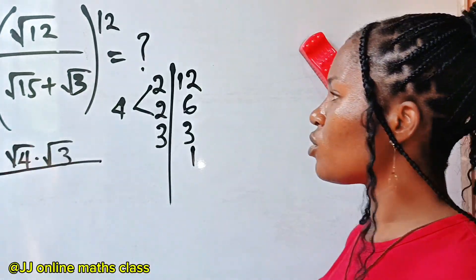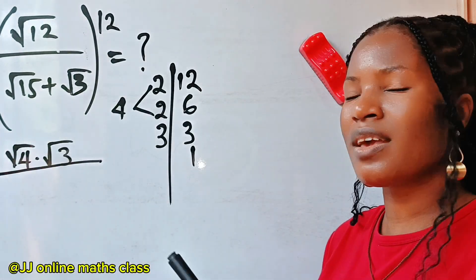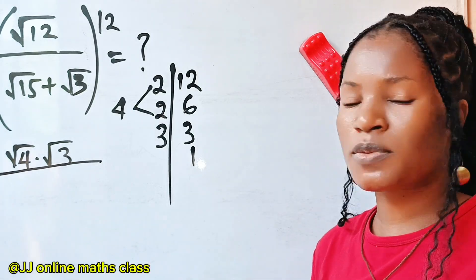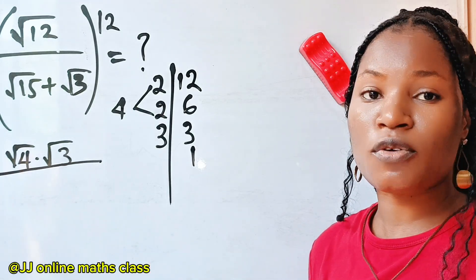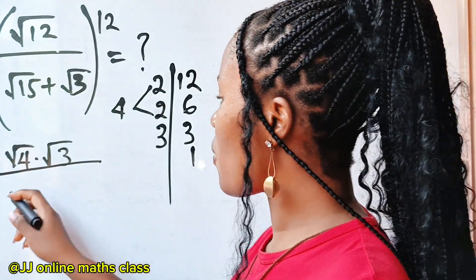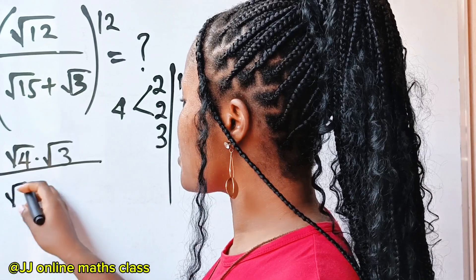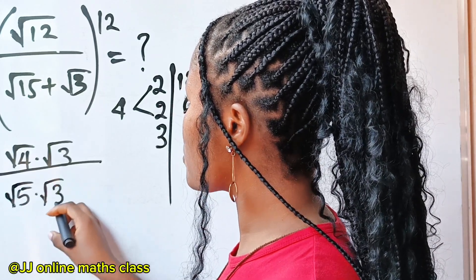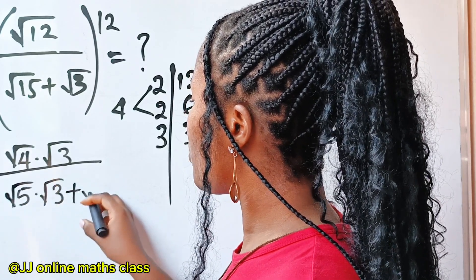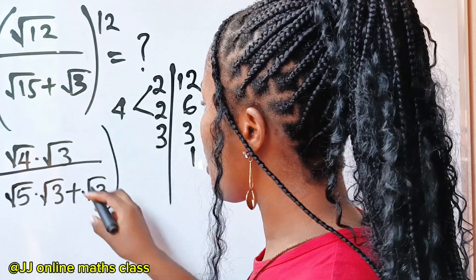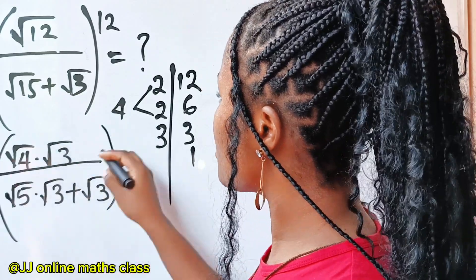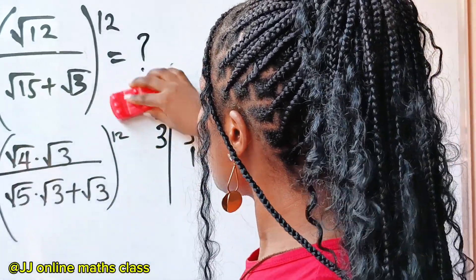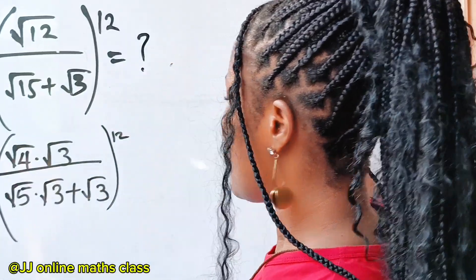Root 15 doesn't have any perfect square in it, so we can express it as square root of five times three. There is no other way to express that. So we have square root of five multiplied by square root of three, plus square root of three — all of this raised to the power of 12.